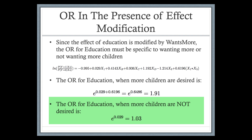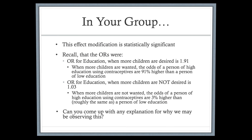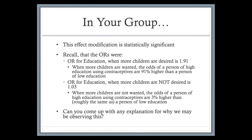When they do not want more children, the odds ratio is 1.03 — about a 3% difference — which roughly comes out to 1. An odds ratio of 1 means there's no association. So when they do not want to have more children, education doesn't really seem to have an effect on whether or not they're using contraceptives. If they want to have more children, highly educated women are using contraceptives almost twice as often.